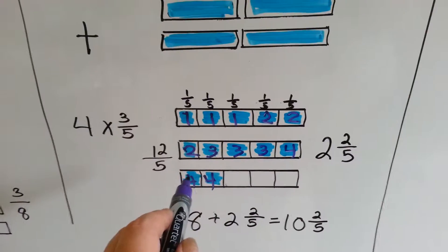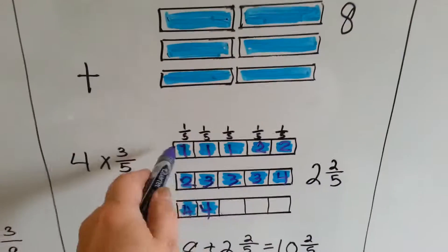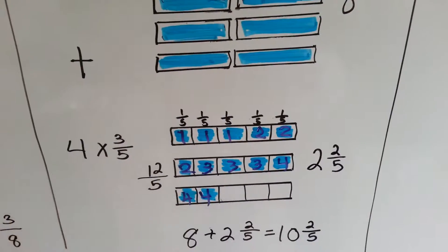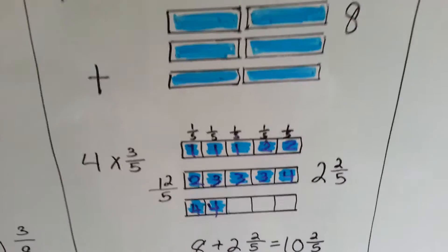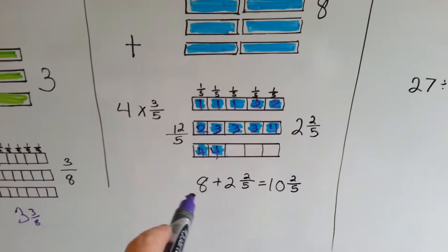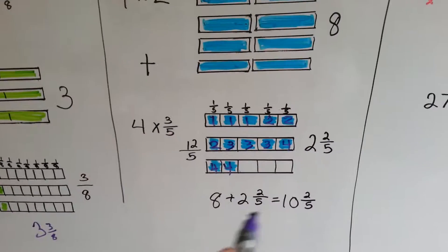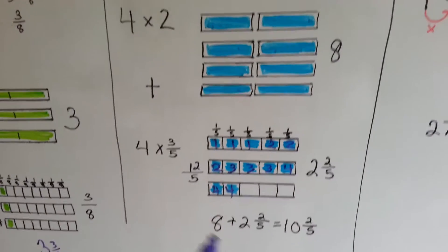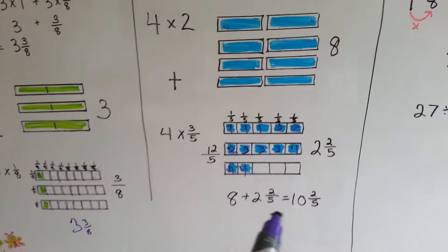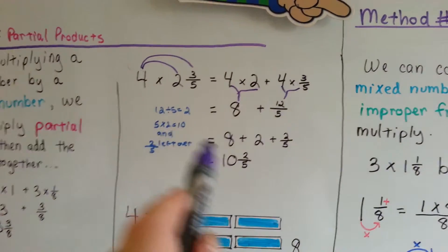That's 12 fifths. We can see we've got 1 whole, 2 whole, and 2 little fifths left over — 2 and 2 fifths. We add the 2 and 2 fifths to the 8, and we get 10 and 2 fifths as our answer. So 4 times 2 and 3 fifths equals 10 and 2 fifths.